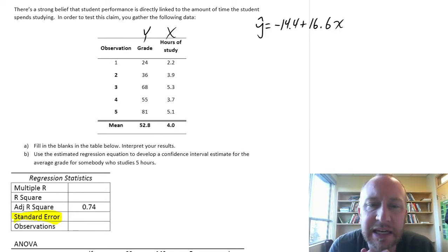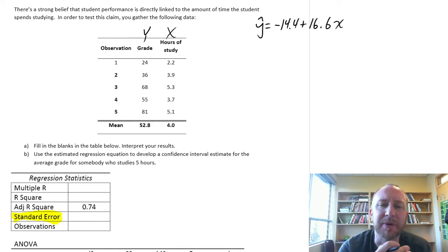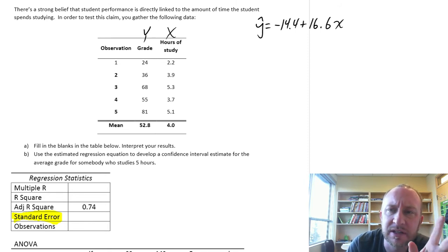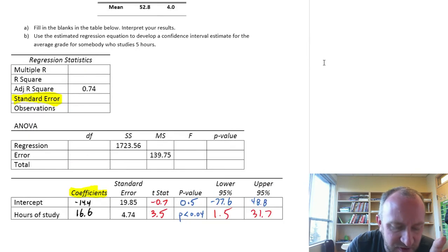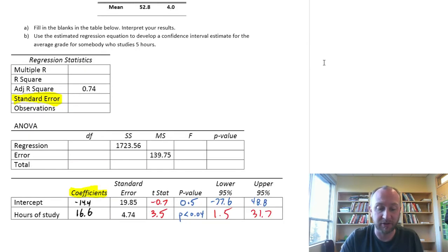Okay, welcome back again. We're almost done this problem now. It's taking a little while, but we're going through a lot of different aspects of this regression problem. So what we've got now, here's our estimated regression equation right up at the top here. We filled in our regression output. So we have our coefficients, we've done our hypothesis testing, we've done our confidence interval estimates.